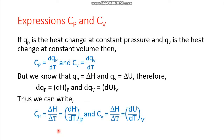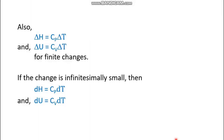We have expressions for Cp and Cv in terms of H and U. For finite changes: Cp = ΔH/ΔT and Cv = ΔU/ΔT. By cross-multiplication, ΔH = CpΔT and ΔU = CvΔT. For infinitesimally small changes: dH = Cp dT and dU = Cv dT. These expressions highlighted in blue are very important for thermochemistry.